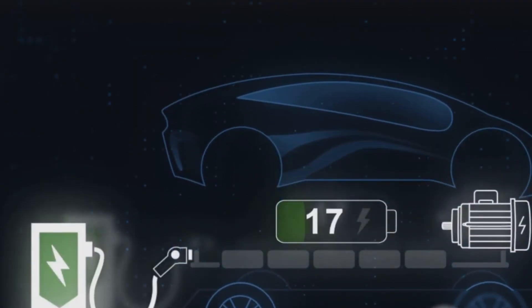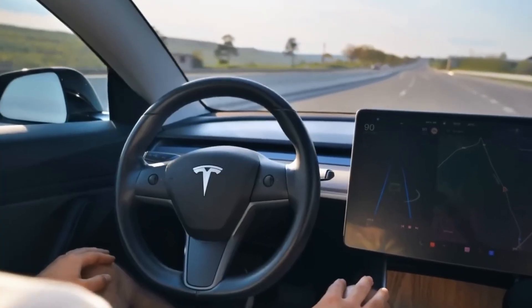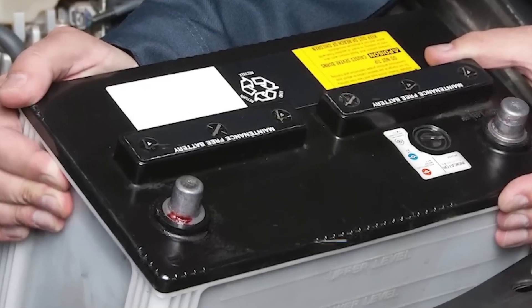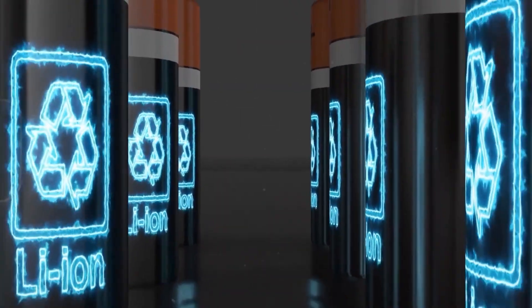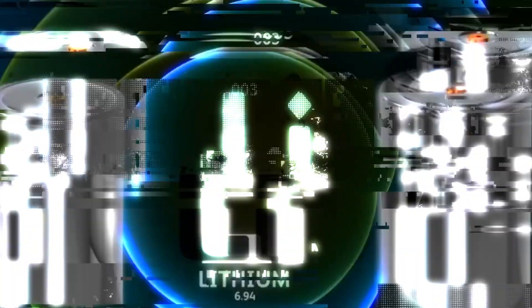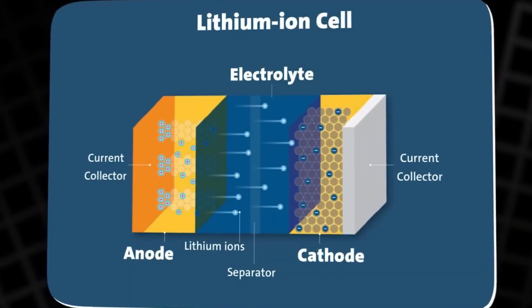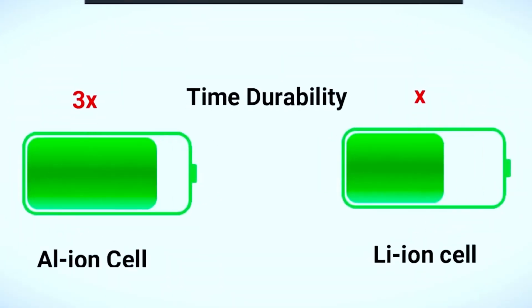Start with energy density. Lithium batteries max out around 250 watt-hours per kilogram. Tesla's aluminum-ion cells exceed 5,000 watt-hours. That's not a small upgrade. It's a complete transformation. A Tesla Model 2 could go from 330 miles of range to more than 3,000 on a single charge.